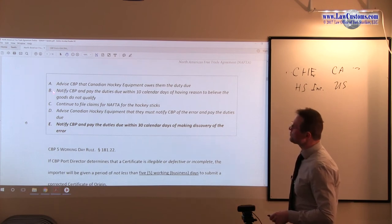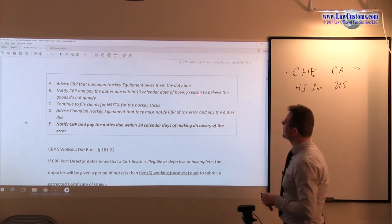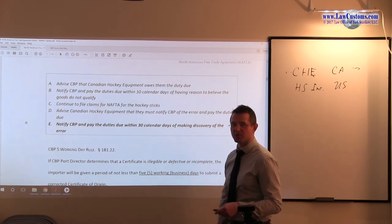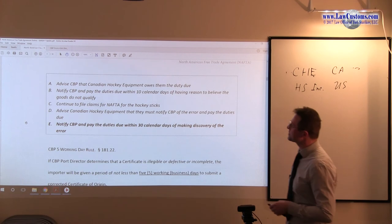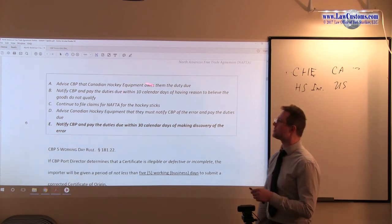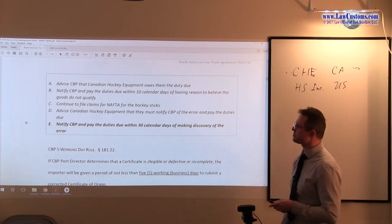B. Notify CBP and pay the duties due within 10 calendar days of having a reason to believe goods not qualify. This is incorrect because we have that 30 calendar day rule, remember? The hockey sticks incorporated has 30 calendar days to make a correct declaration to customs. B is incorrect for that reason.